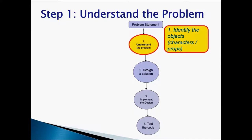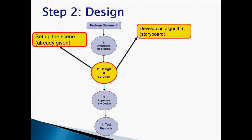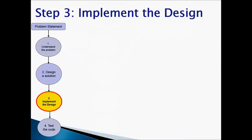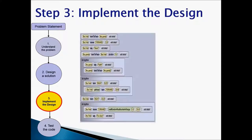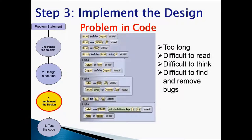We know our objects and the actions that they are going to do. Step 2: Design. We already have created the animation and we already have an algorithm for it. Step 3: Implement the Design — that means we are writing code. In a previous chapter, we finished writing code for this Snow People animation. Now the problem with the code was it is too long, difficult to read, difficult to think through, and difficult to find and remove bugs.